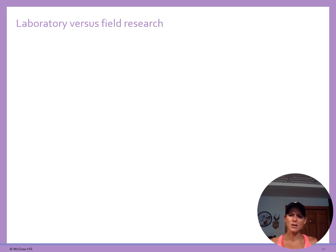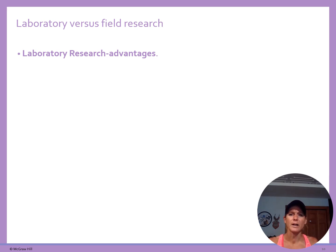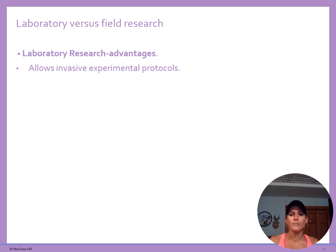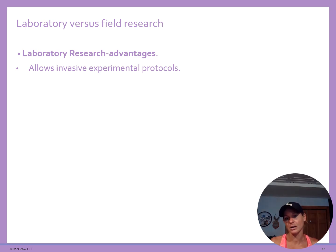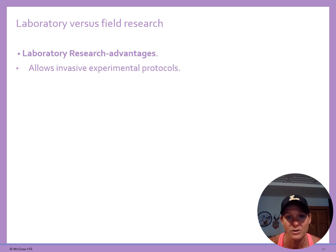Looking at the difference between laboratory and field research: laboratory research gives us great internal validity, meaning we know what happens is due to the change we've induced. We have a lot of control in the lab — we can control the environment, the speed of the treadmill, the temperature — which creates a more rigid and controlled environment for our subjects.